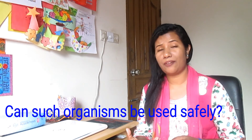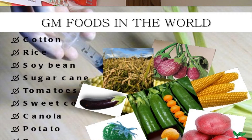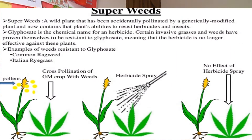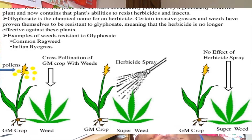Can such organisms be used safely? While it might seem that few countries would object to the growth of genetically modified crops producing vaccines for human or animal use, there are still people who object to the growth of pro-vitamin A enhanced rice. However, most objections are raised against the growth of herbicide-resistant or insect-resistant crops.